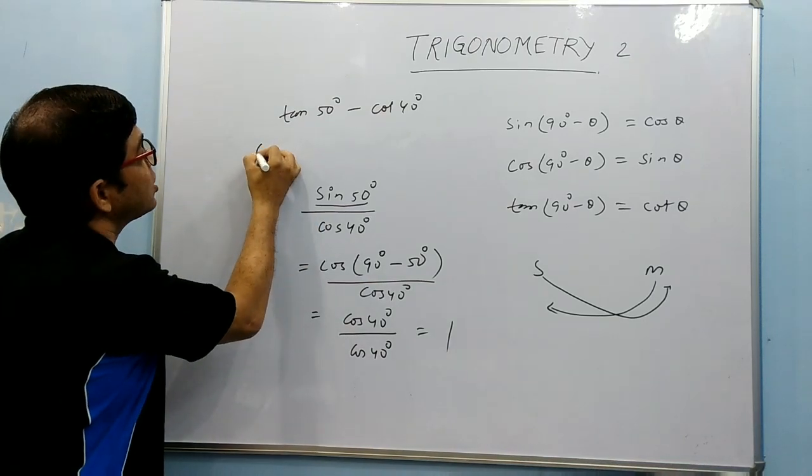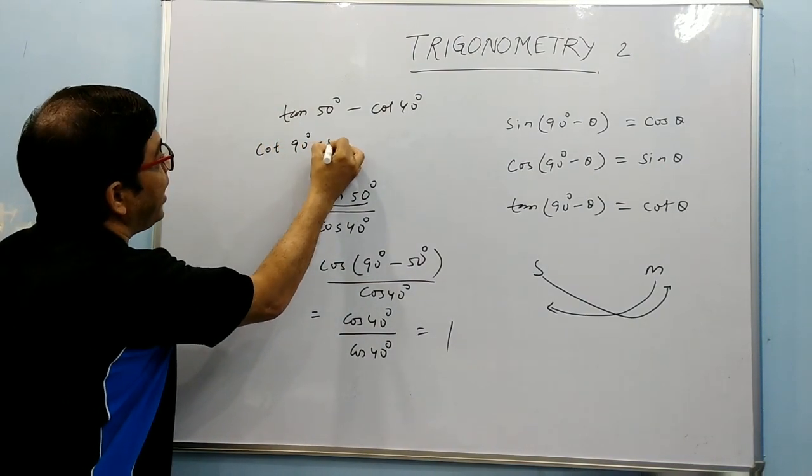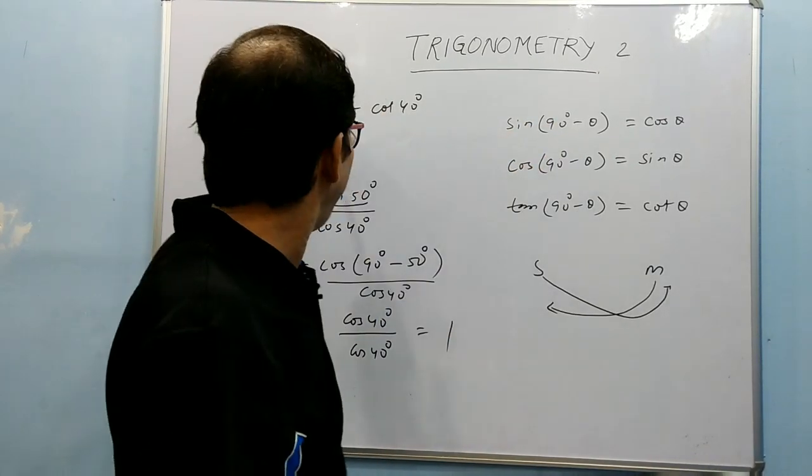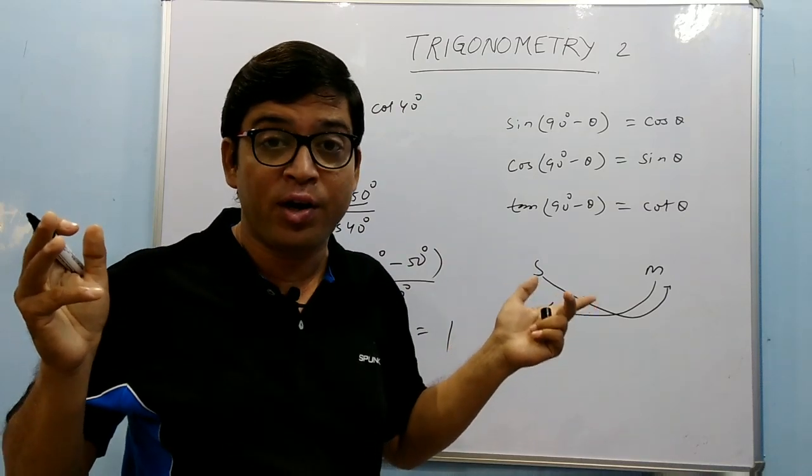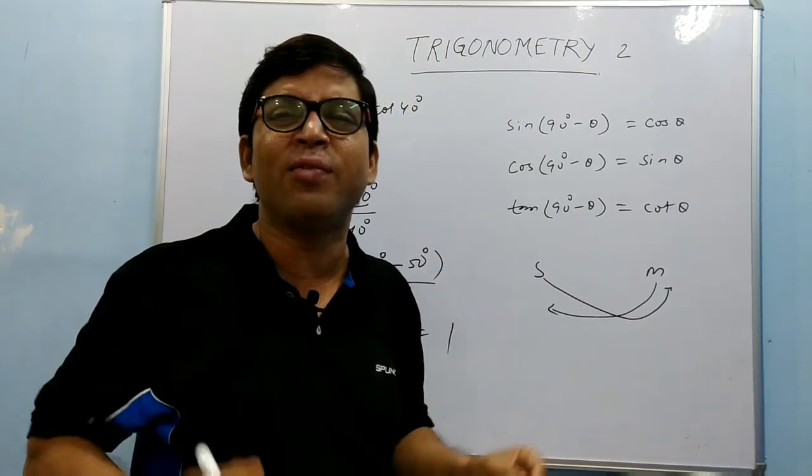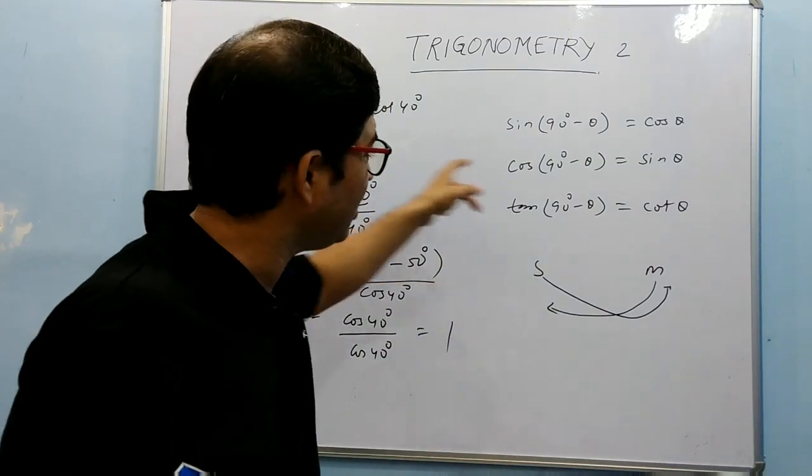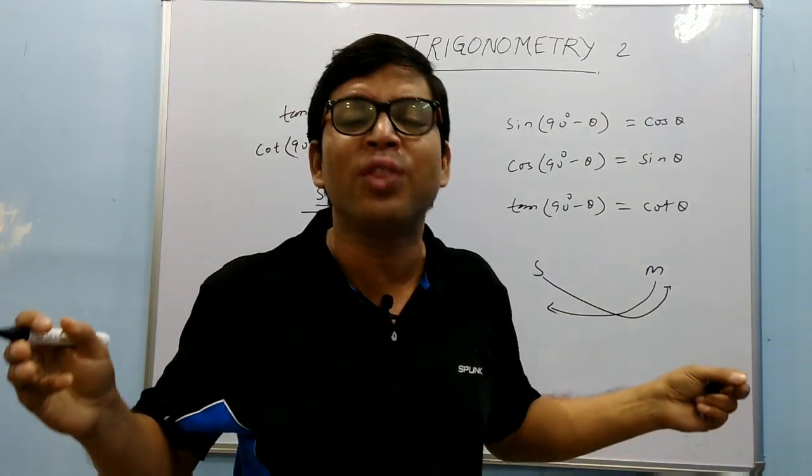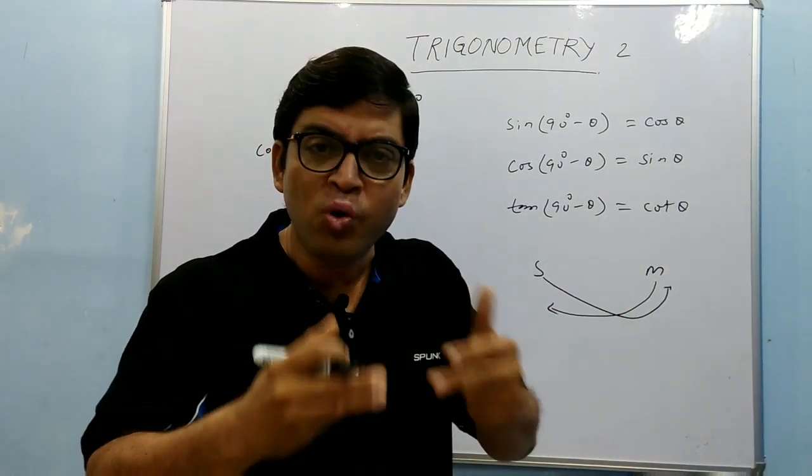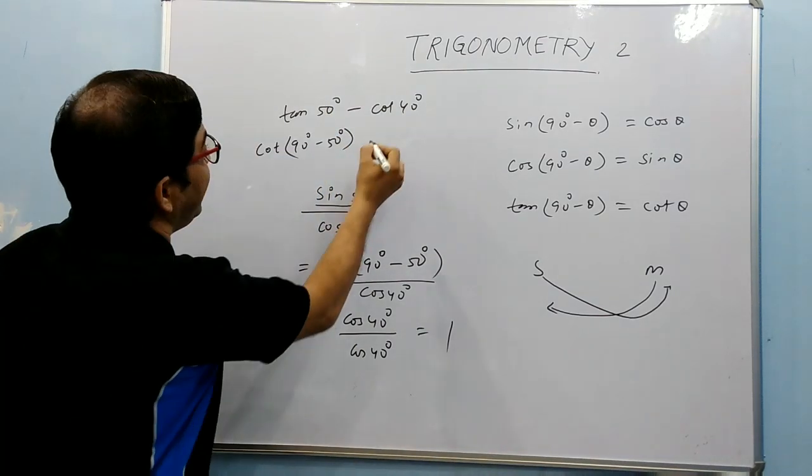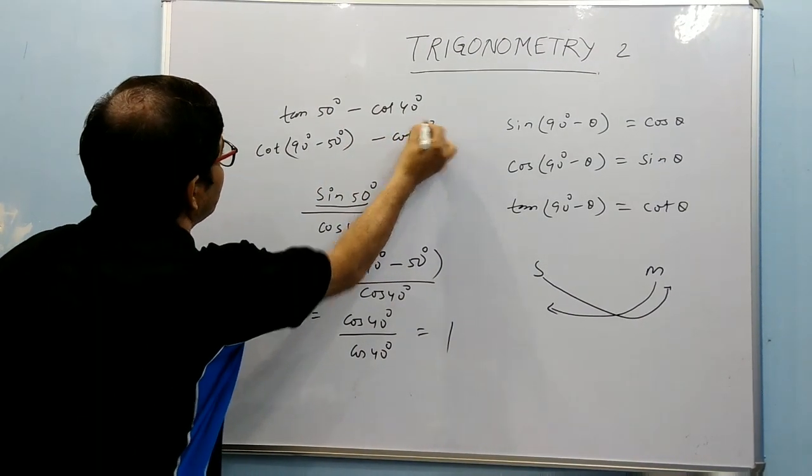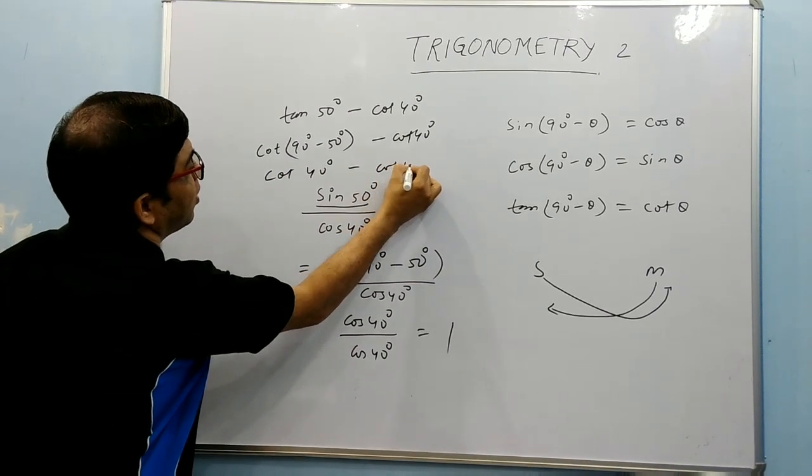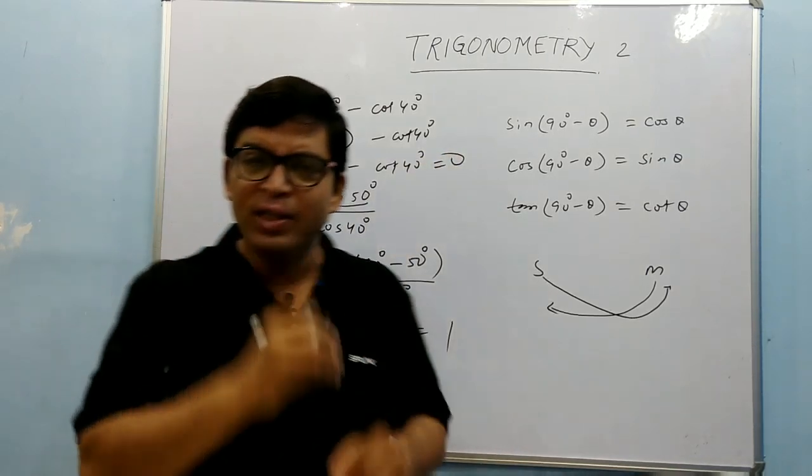tan θ is cot(90° - θ). No need of thinking if you follow this way. You just have to think how to make 50 as 40: 90 - 40. If you follow cot θ = sin(90° - θ), sin θ = cos(90° - θ), you need not think at all. So cot(90° - θ) - cot 40° gives you cot 40° - cot 40°, which is 0.